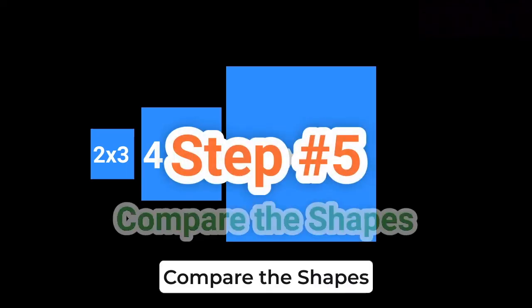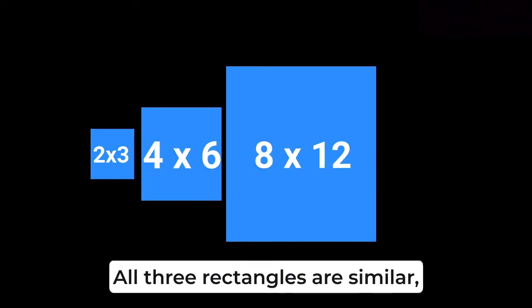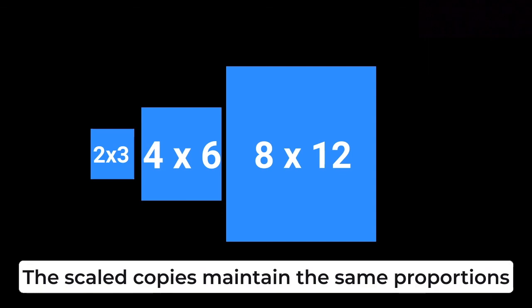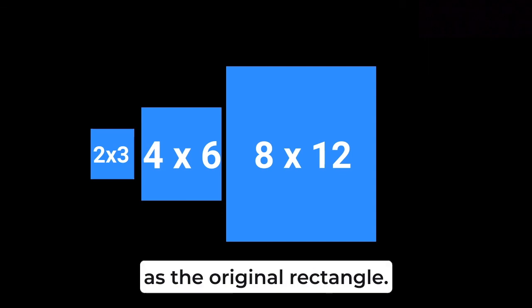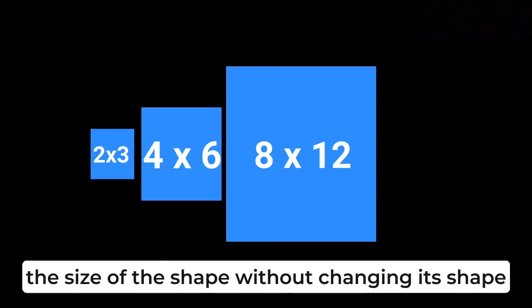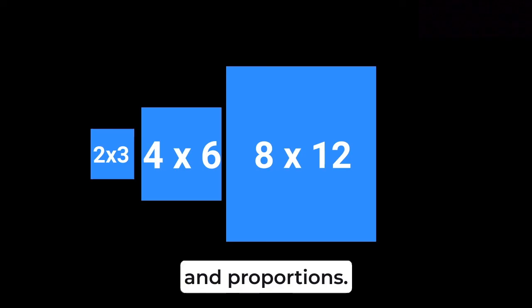Step five, compare the shapes. All three rectangles are similar, meaning they have the same shape but different sizes. The scaled copies maintain the same proportions as the original rectangle. Notice that multiplying by a scale factor affects the size of the shape without changing its shape and proportions.